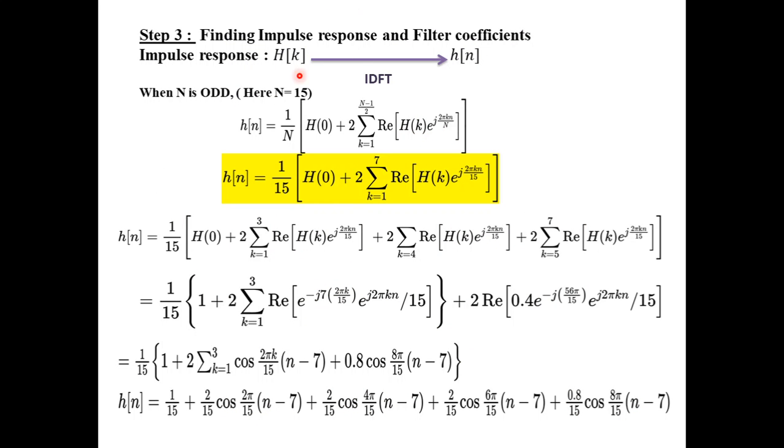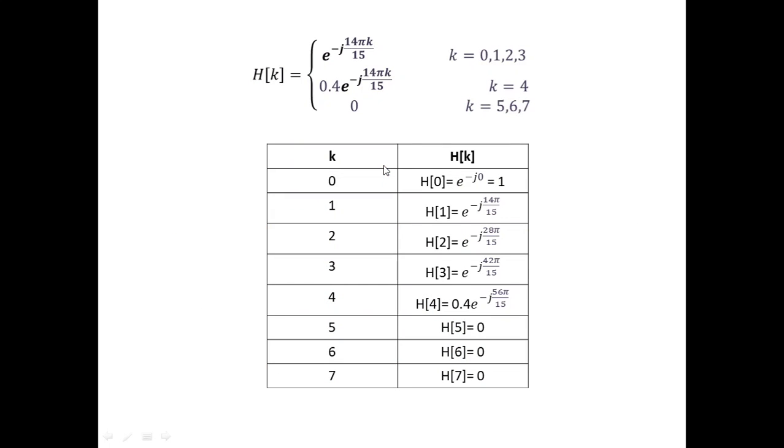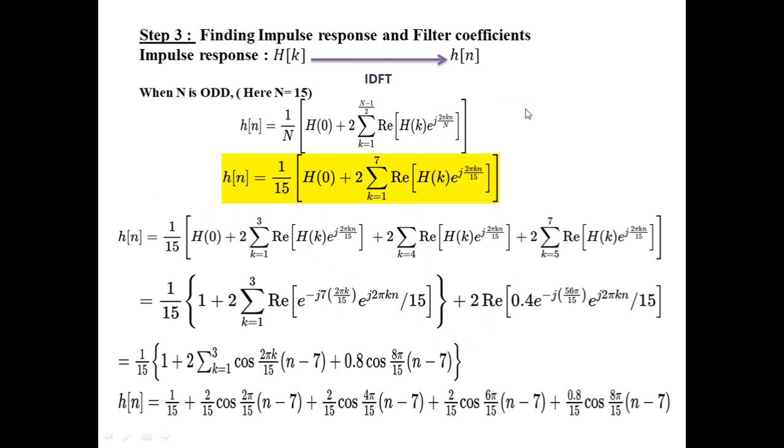We need to find the impulse response. So h of k take IDFT h of n, here n equal to 15. Choose the filter equation appropriately. We can see that it includes k equal to 0, k equal to 1 up to k equal to 7. So it is taken over here. We know that here k equal to 1 to 7, we have the values here as k equal to 0, 1, 2, 3 and a different value for 4 and for 5, 6, 7, it is 0.